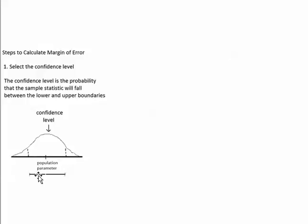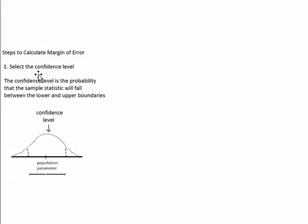You're going to end up getting the distance to the lower and upper boundaries of the area that has a 0.90 probability, and you'll end up getting the 90% margin of error as your answer. When you're selecting the confidence level, you're really just selecting which margin of error you want to calculate — whether that's the 60%, 70%, or 80% margin of error. There's a different margin of error for every percentage between 0 and 100, and it's up to you to decide which one you want to calculate.